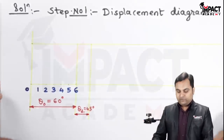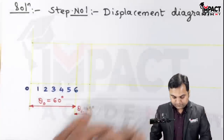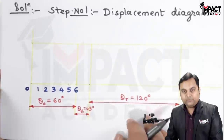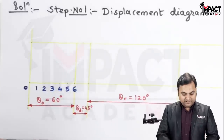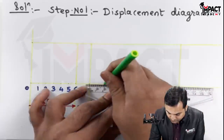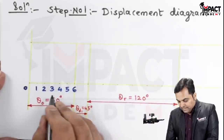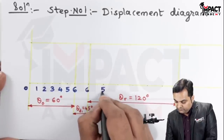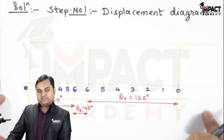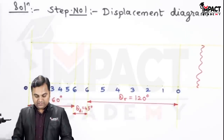Then there is a return stroke of 120 degrees, for which I take 12 centimeters. This 120 degrees is also divided into 6 equal parts, so 2 centimeters equals 20 degrees, taking 2 centimeter divisions. For simplicity I keep the same notations in reverse order: 6, 5, 4, 3, 2, 1, 0. After this 120 degree return stroke there is again a dwell of 45 degrees, shown with a broken section indicating the remaining dwell period.